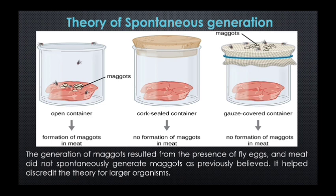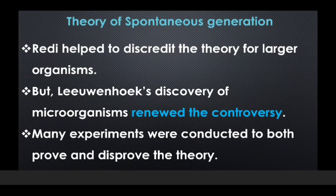His hypothesis was supported when maggots developed only in the uncovered jar, but not in the gauze-covered or tightly sealed jar. He concluded that maggots could only form when flies were allowed to lay eggs in the meat, and thus maggots were the offspring of flies and not the product of spontaneous generation. After this experiment it became obvious that at least larger organisms could not be produced from non-living matter through spontaneous generation.